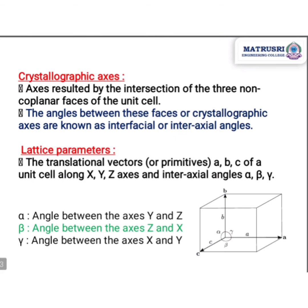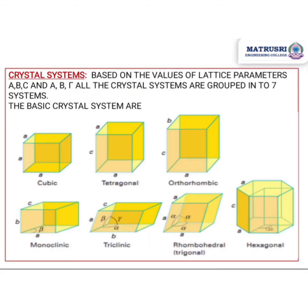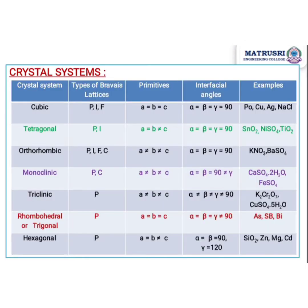The seven crystal systems are: cubic, tetragonal, orthorhombic, monoclinic, triclinic, rhombohedral, and hexagonal. It is easy to remember using the code CTOMTRH — C for cubic, T for tetragonal, O for orthorhombic, M for monoclinic, T for triclinic, R for rhombohedral, and H for hexagonal.